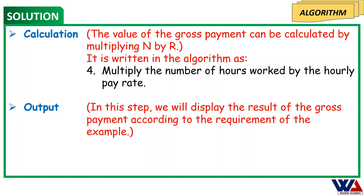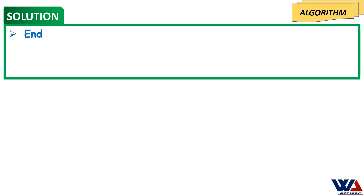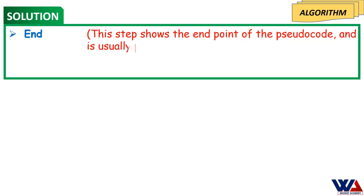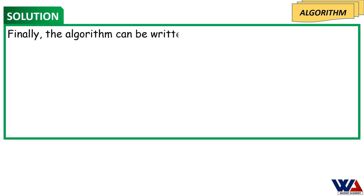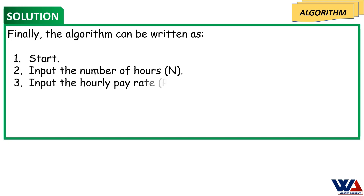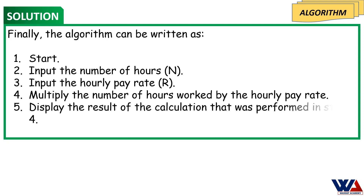For the calculation, the gross payment can be calculated by multiplying n by r. For the output step, we display the result of the gross payment. Finally, the algorithm can be written as: 1. Start. 2. Input the number of hours n. 3. Input the hourly pay rate r. 4. Multiply the number of hours worked by the hourly pay rate. 5. Display the result. 6. End.